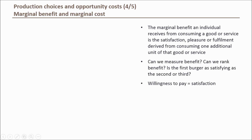One way economists like to measure satisfaction is willingness to pay — the more you like something, the more you're willing to pay for it. Using our biscuit example, the more biscuits you eat, the less you're willing to pay for the next biscuit, because the satisfaction you'll derive from eating another biscuit will be less than the previous one. So satisfaction decreases as we increase consumption of the same good, because individuals prefer a mix of goods rather than more of the same.